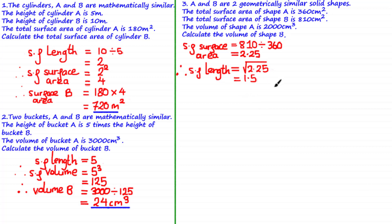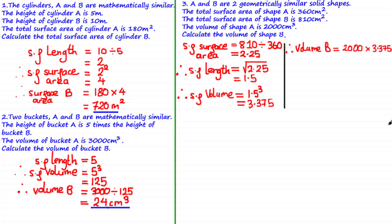We find the scale factor of volume by cubing 1.5, giving 3.375. Since the total surface area of B is greater than that of A, the volume of B is greater than the volume of A. So we multiply 2000 — the volume of A — by the scale factor of volume, 3.375, to get that the volume of B is equal to 6750 centimeters cubed.